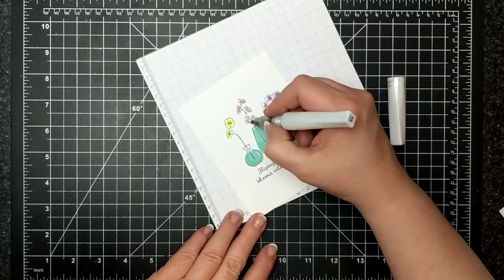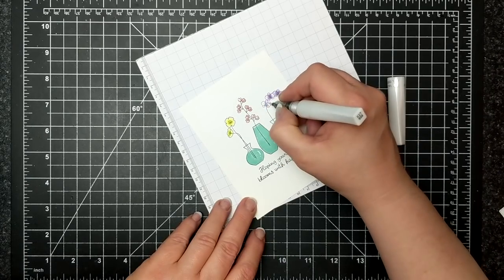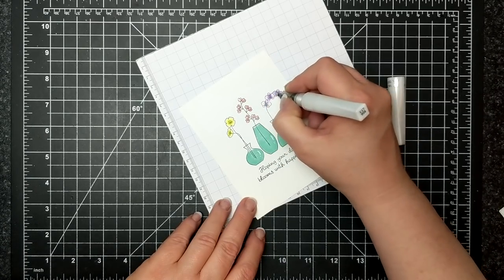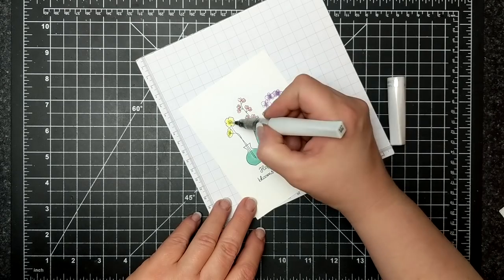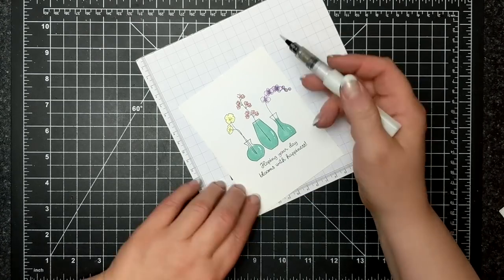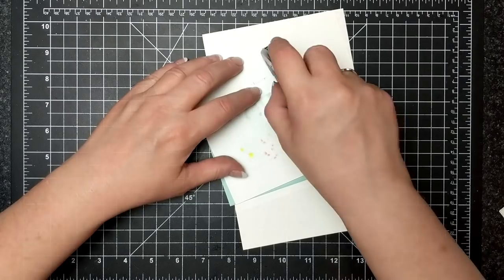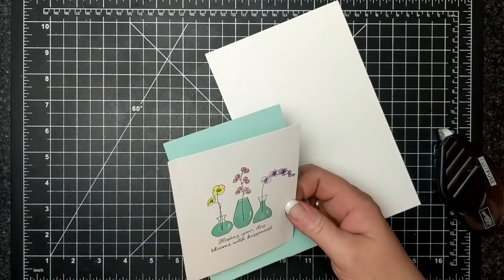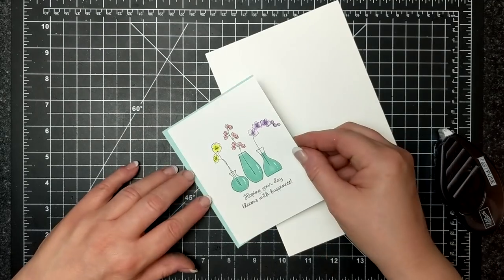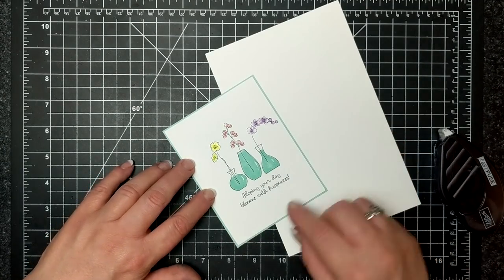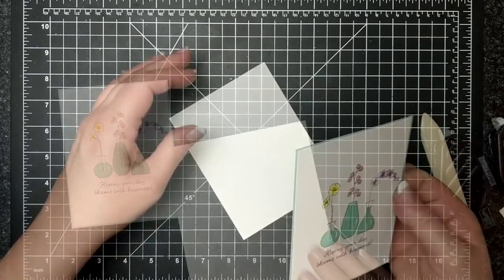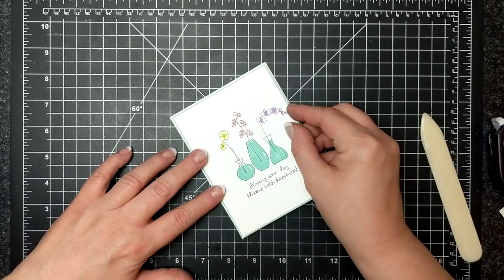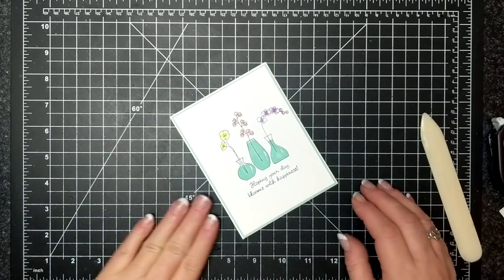I've covered the blossoms with Wink of Stella just to make them a bit sparkly and I will be adhering this panel to a Pool Party panel and it's just like an eighth of an inch bigger, and then I am adhering that all to a Whisper White thick card base.